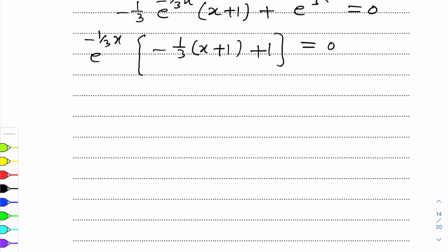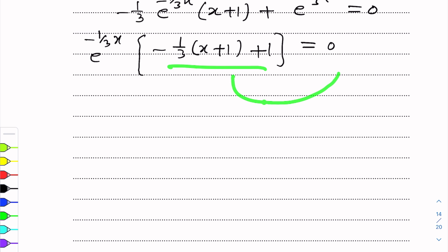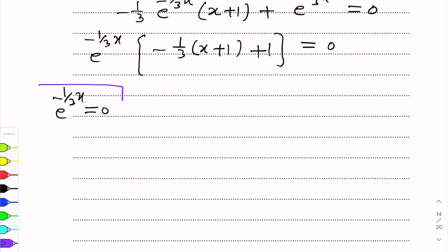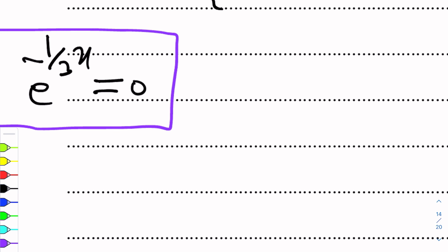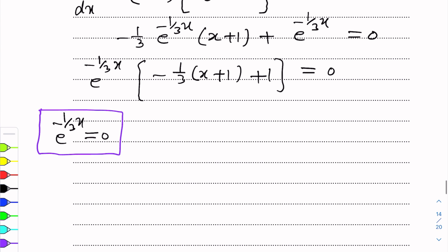This means either e^(-1/3 x) = 0 or the bracket term = 0. e^(-1/3 x) = 0 is not applicable because we cannot find x from it — we would need to take log, and log 0 is undefined. So we leave that and set the bracket equal to 0 to find x.